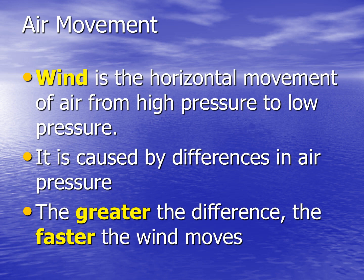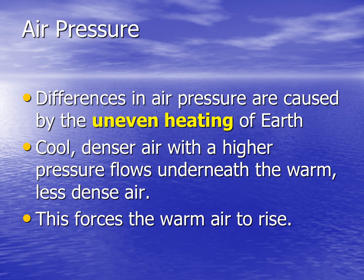First, let's look at the movement of air. Wind is the horizontal movement of air from high pressure to low pressure. It is caused by differences in air pressure, and the greater the difference, the faster the wind will move. Differences in air pressure are caused by the uneven heating and cooling of the Earth. As air warms, it rises. As it cools, it falls. Cooled, dense air with higher pressure flows underneath warm, less dense air, forcing warm air to rise, moving air and creating wind.